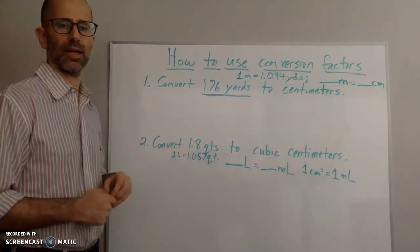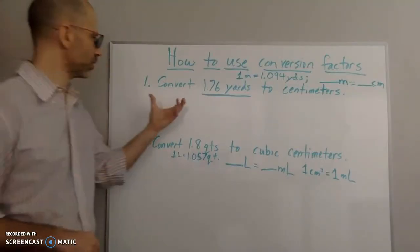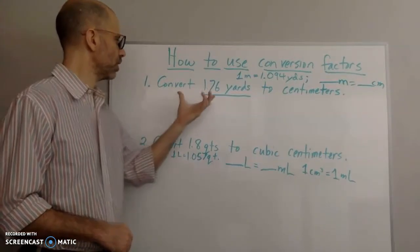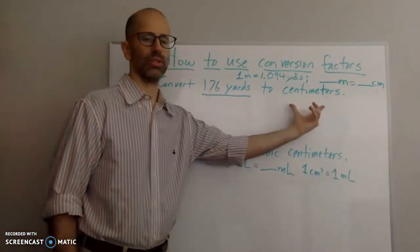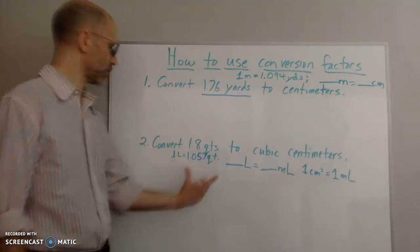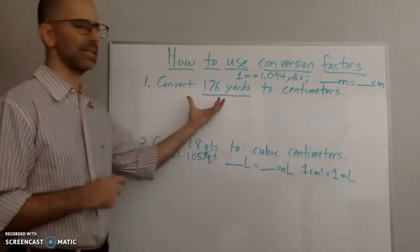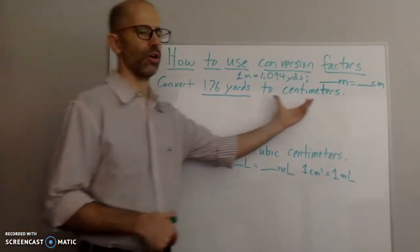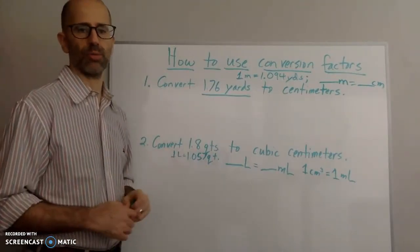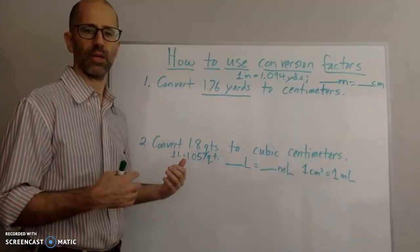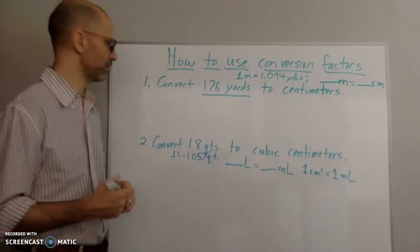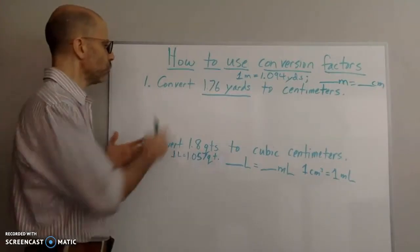In these problems it's clearly stated where you're going to begin and where you're going to end. The first problem asks you to convert 1.76 yards to centimeters, and the second asks you to convert 1.8 quarts to cubic centimeters. It's not always so clear in larger word problems where you have to figure out what information to use, but we'll work on those later.